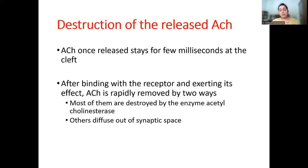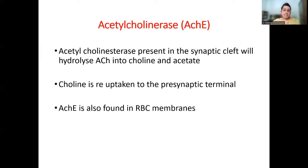After doing its function, acetylcholine released into the synaptic cleft stays for only a few milliseconds. It is rapidly removed in two ways: most is destroyed by acetylcholinesterase, while the rest diffuses out of the synaptic space. Acetylcholinesterase hydrolyzes acetylcholine into choline and acetate. The choline is taken back up by the pre-synaptic terminal to make more acetylcholine — it is a cycling process.